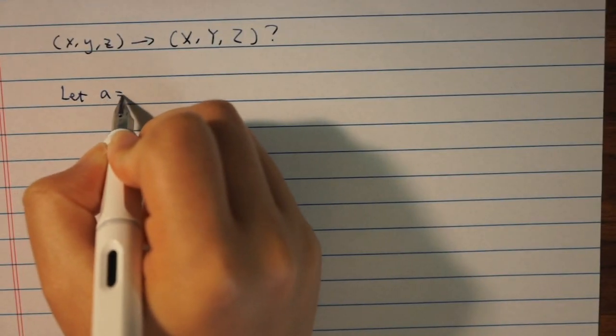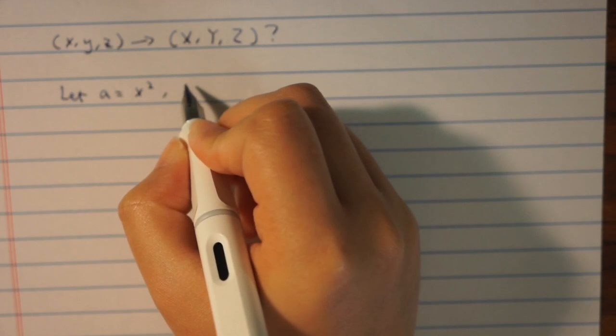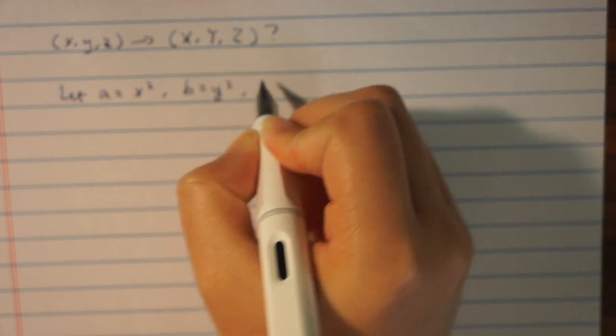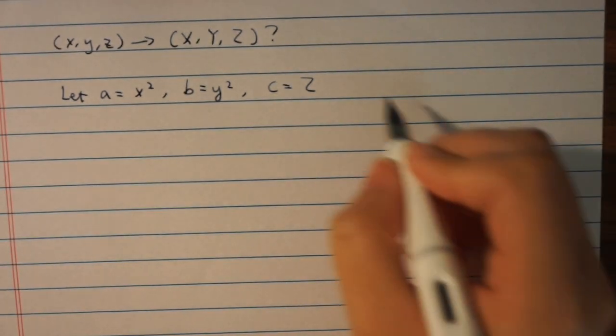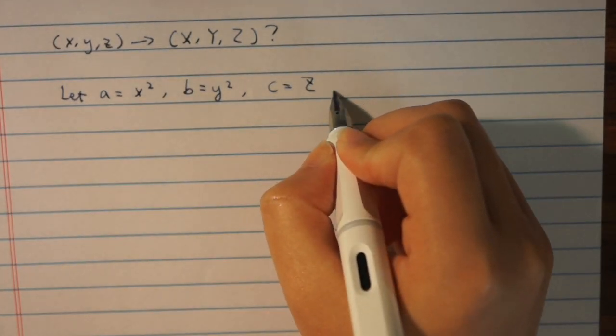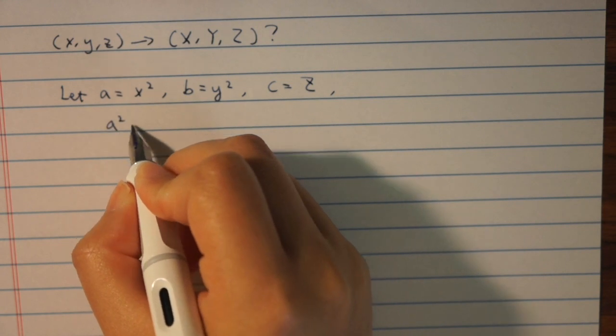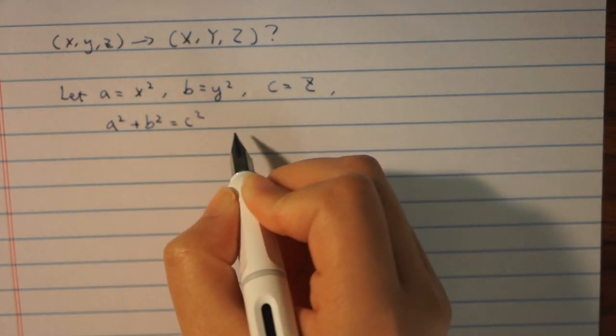Let a equals x squared, b equals y squared, c equals z. Then a, b, c is a primitive Pythagorean triple, namely a squared plus b squared equals c squared.